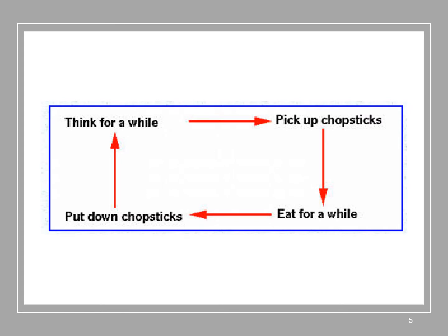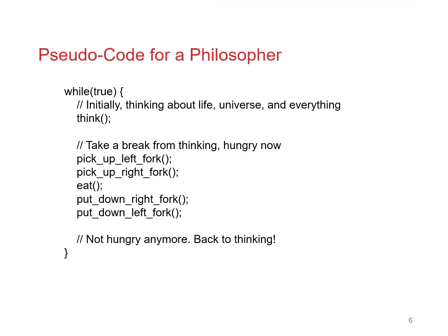The state machine for a philosopher is: they think for a while, then once they're hungry they change to a hungry state and try to pick up the chopsticks or forks. Once they've acquired both forks they can eat — you can't eat with only one chopstick. They eat for a while, then when satiated they put down the chopsticks and start thinking again, going around in a loop forever.